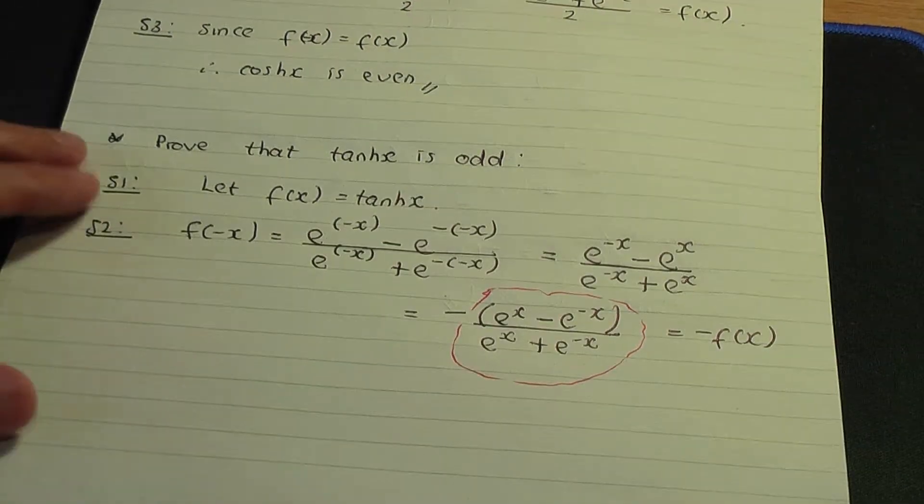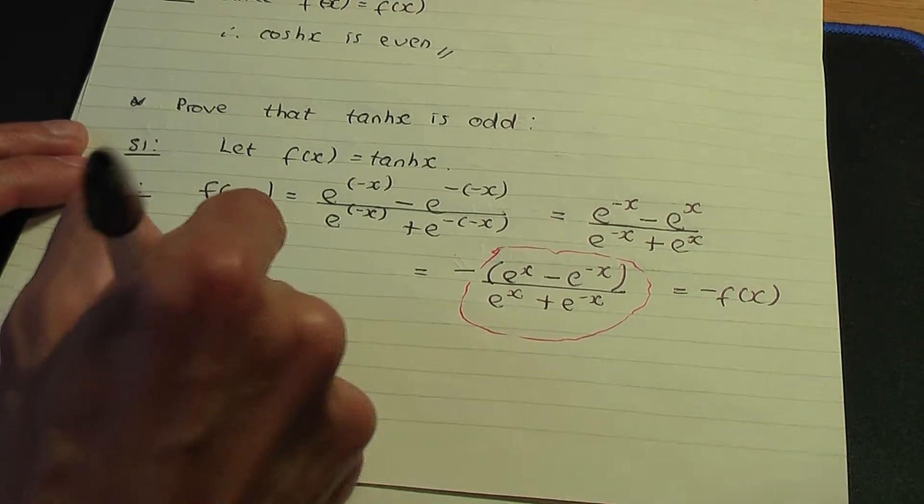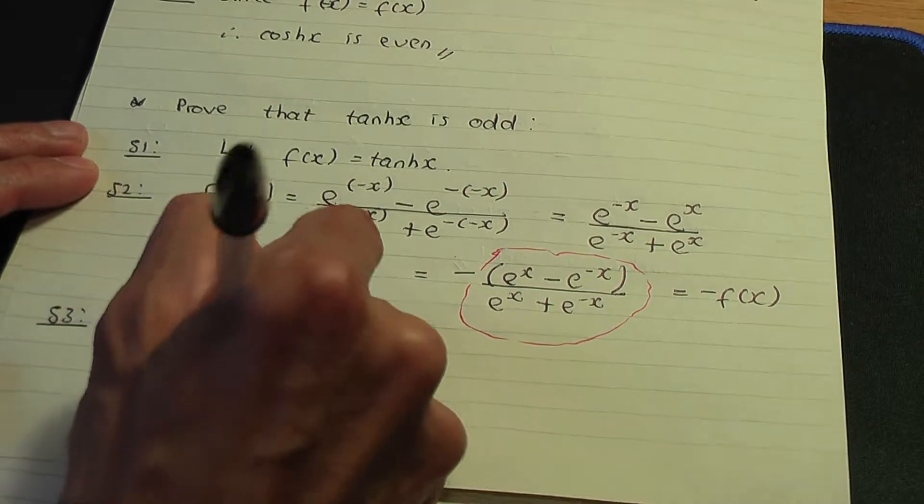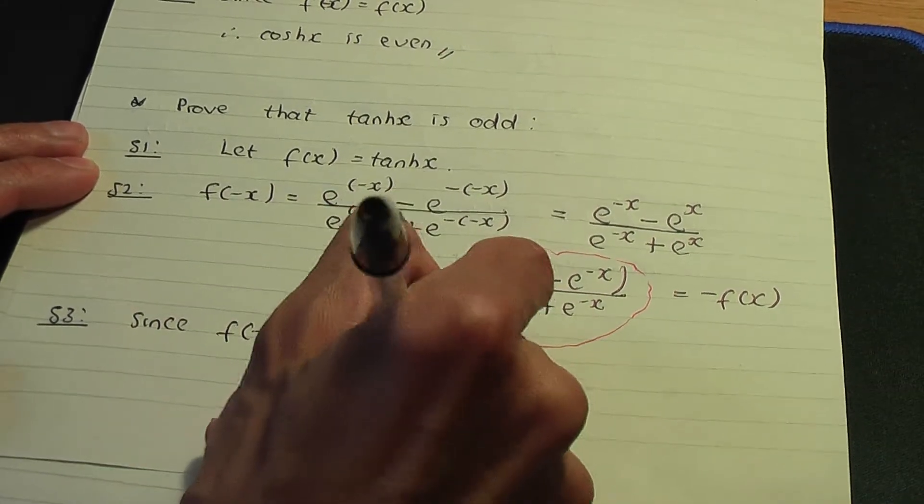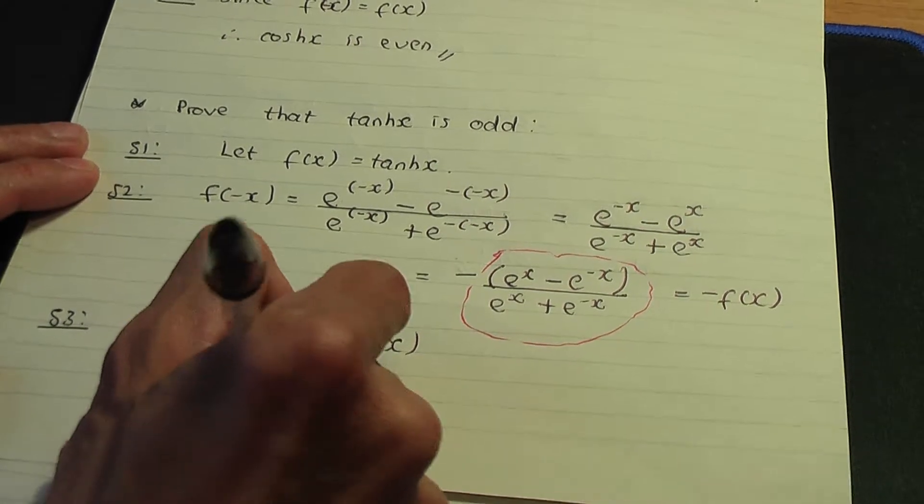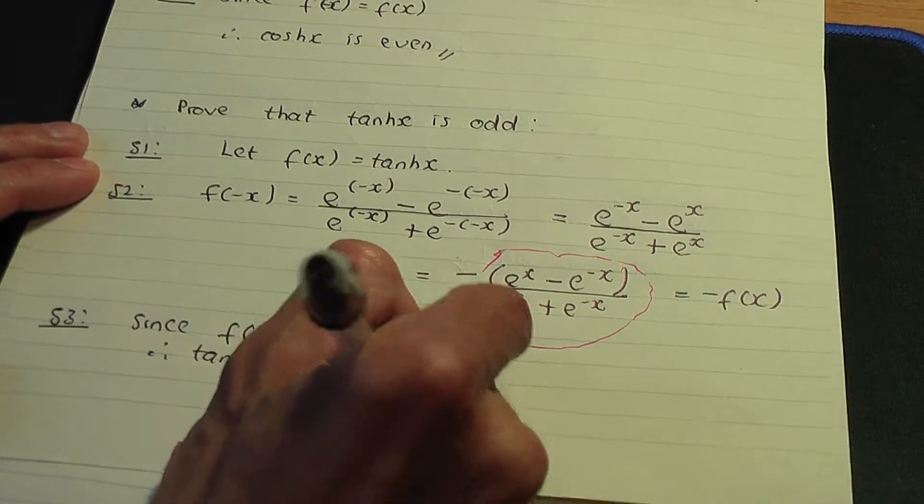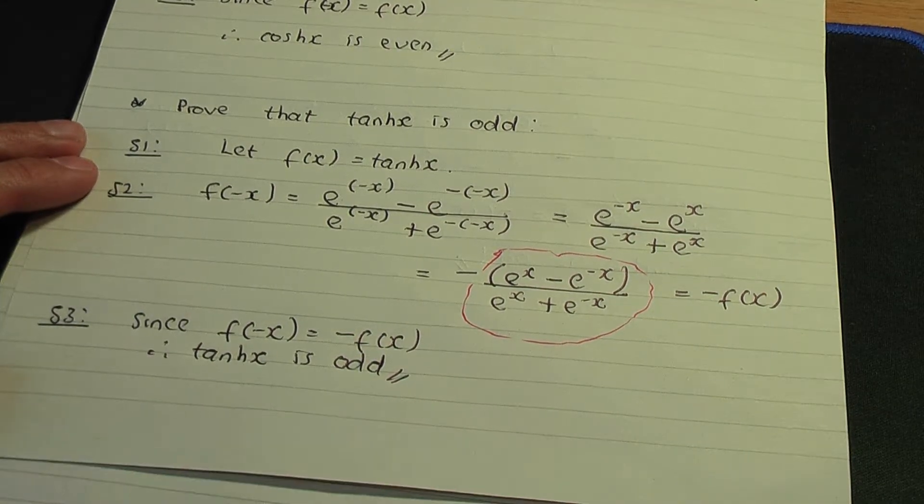That takes us to the last step, step number three, just to conclude. Since f(-x) equals -f(x), therefore hyperbolic tan is odd. That concludes the proof.